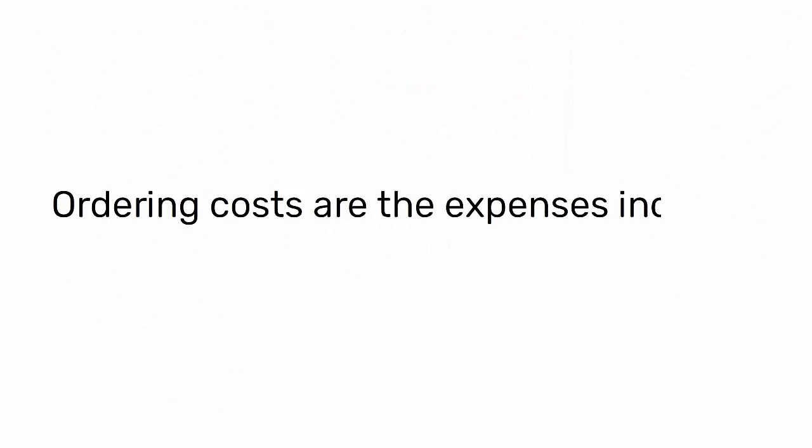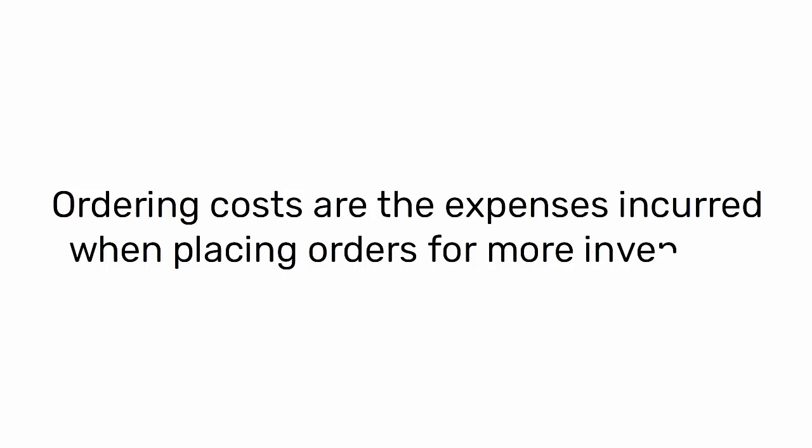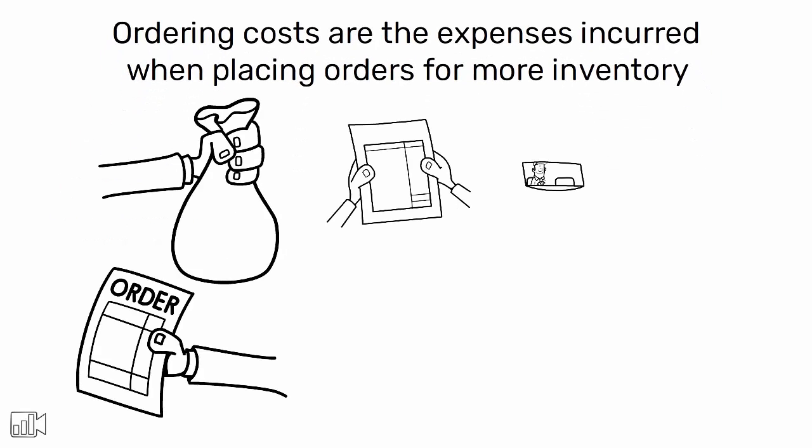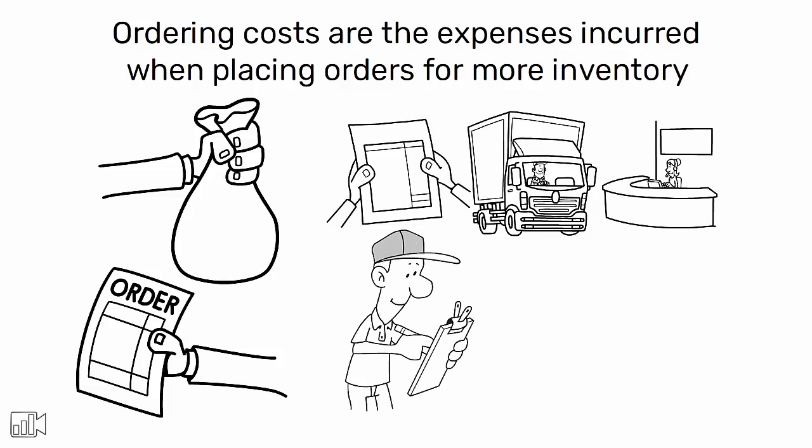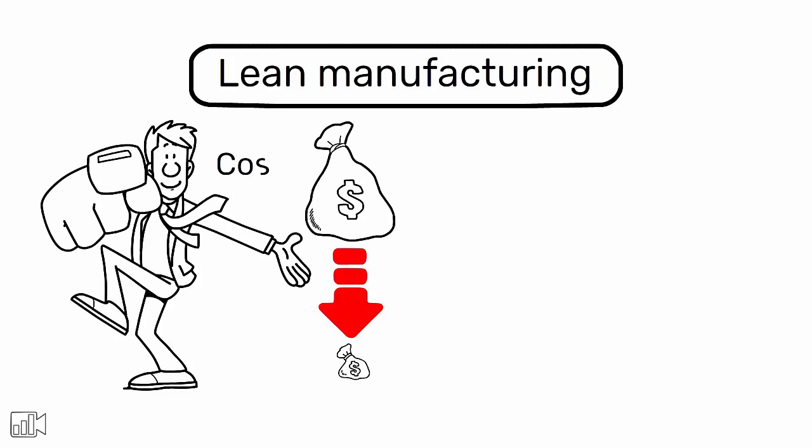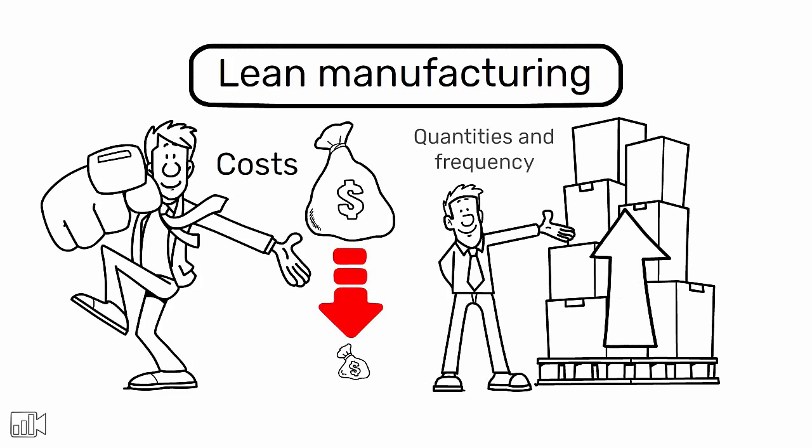Ordering costs are the expenses incurred when placing orders for more inventory. These include costs related to processing purchase orders, transportation and shipping fees, and receiving and inspecting the items. In a lean manufacturing context, the goal is to minimize these costs by optimizing order quantities and frequency.